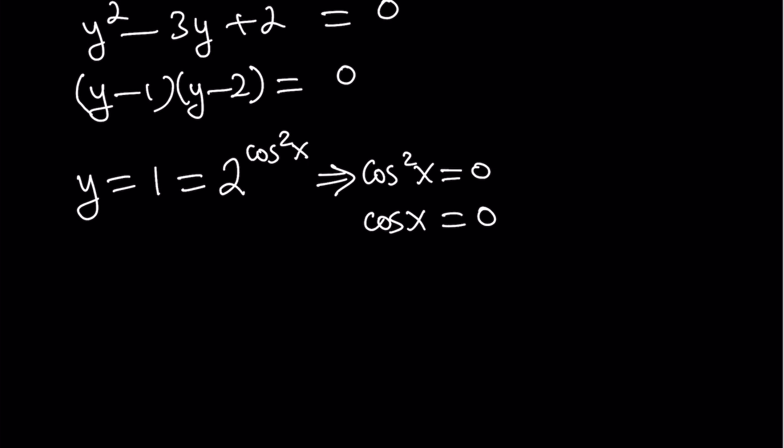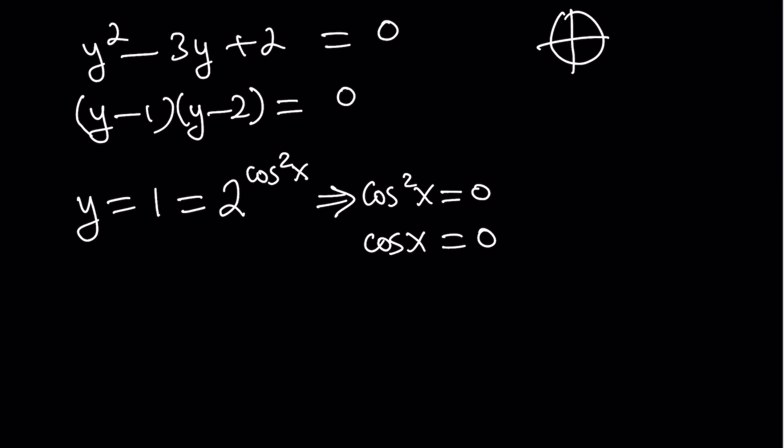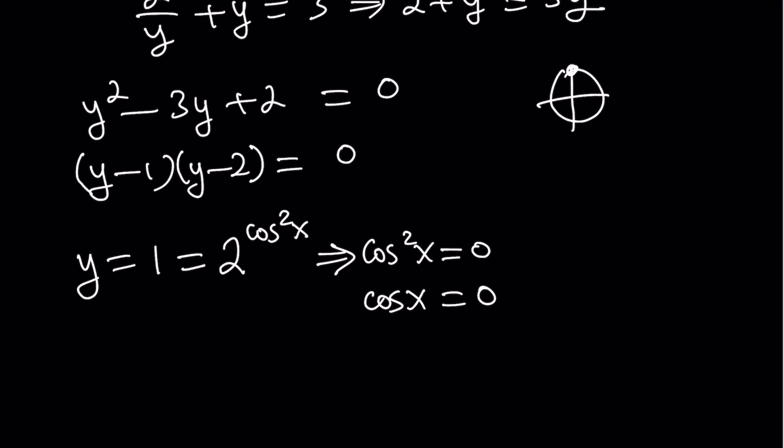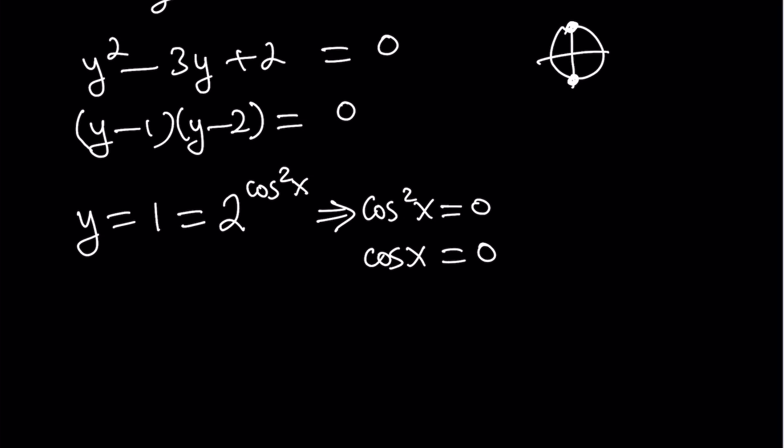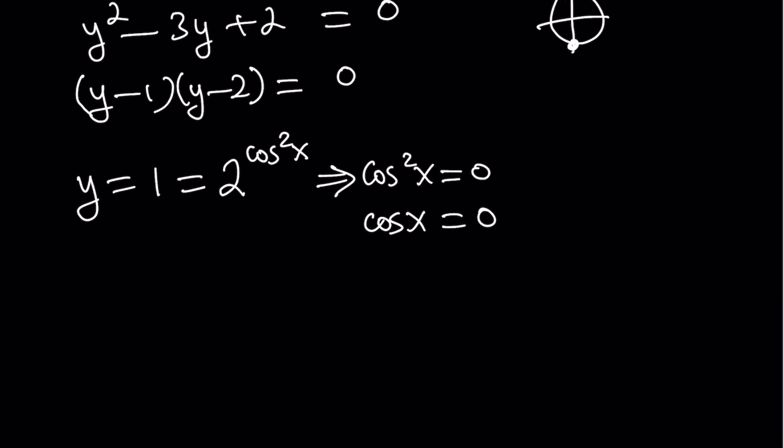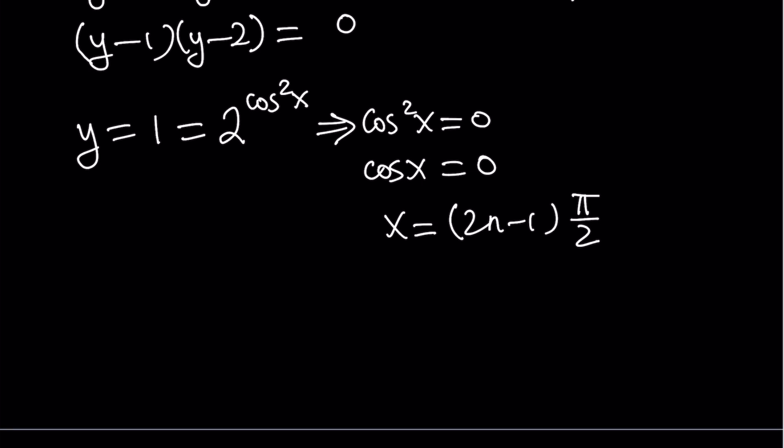Great. Now, from here, what do we get, right? When cosine x is equal to 0, if you think about the unit circle, unit circle tells us that cosine is 0 at pi over 2 and 3 pi over 2. And of course, it's just going to keep rotating. So it also means that we're basically dealing with odd powers of pi over 2, which we can write as 2n minus 1 multiplied by pi over 2, where n is a positive integer. It could also be a negative, but it's just an integer anyways.